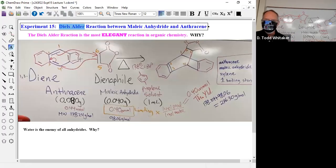So we're doing a Diels-Alder reaction. Diels-Alder, two German gentlemen, Otto Diels and Kurt Alder. We're doing it between maleic anhydride and anthracene.